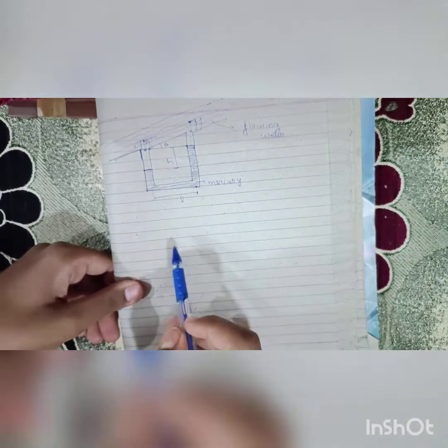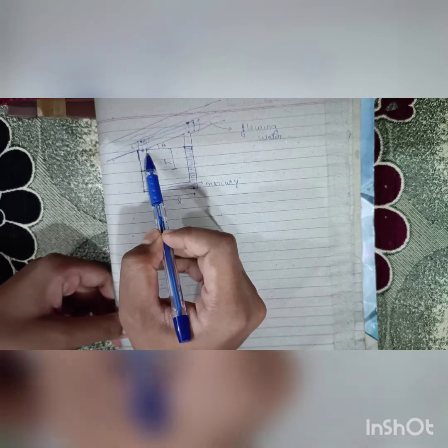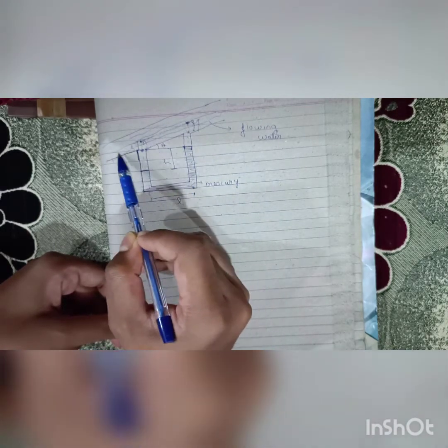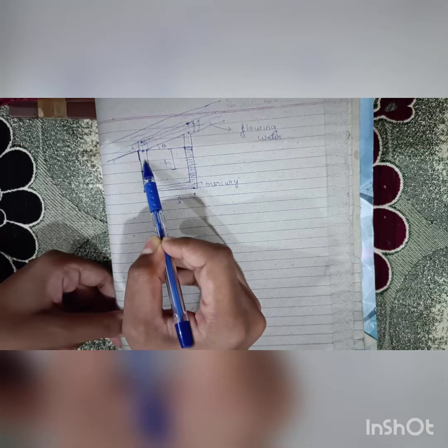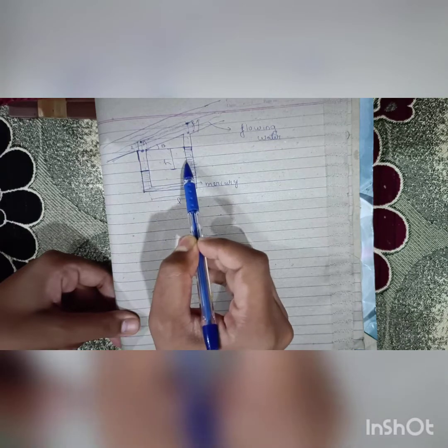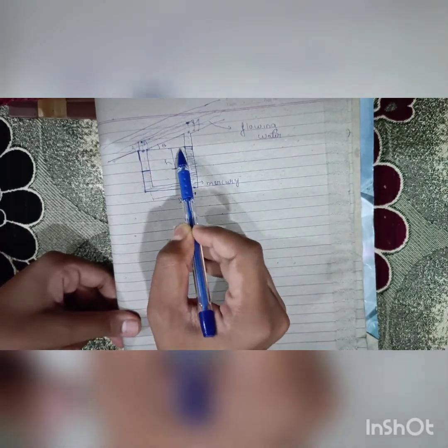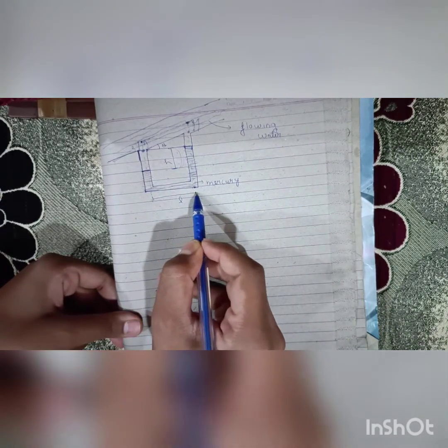Since the water is flowing, some water will be poured here and some water will be poured here. The water entering here will push the mercury column, and because of this it will rise to a height h.